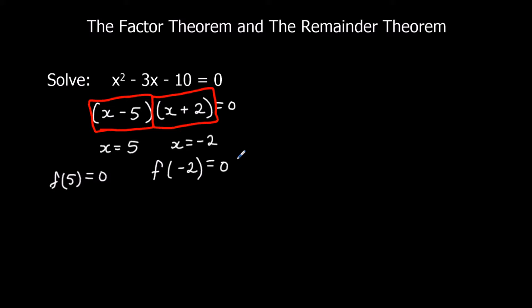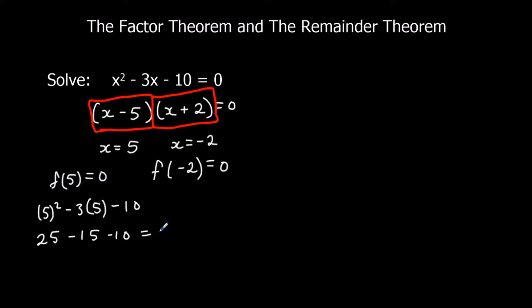We can substitute these in and check. If I substitute in 5: 5 squared minus 3 times 5 minus 10, that's 25 minus 15 minus 10, which equals 0. So x minus 5 is a factor because f(5) gives an answer of 0. The same thing works if I substitute in minus 2 — I'll also get 0, because x plus 2 is a factor.